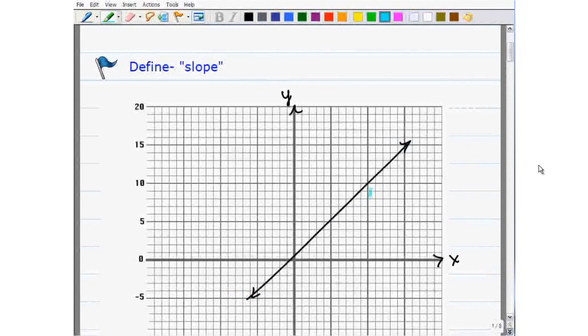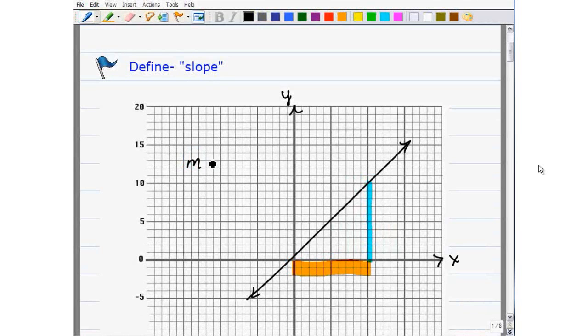And what the slope is - the slope compares how much the line rises in reference to how much it runs out. And the abbreviation for slope in algebra is M. So M is the slope.